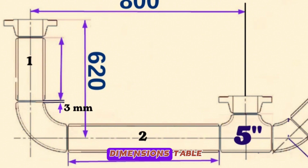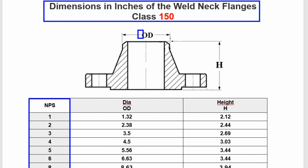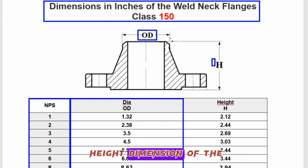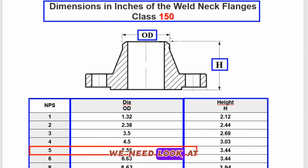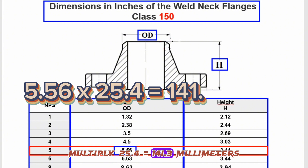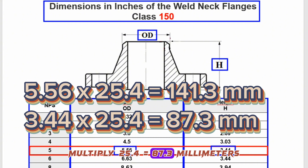Let's first look at the weld neck flange dimensions table. This is the chart of dimensions in inches of the weld neck flange Class 150. The NPS column shows the nominal pipe size, the OD column shows the outside diameter, and the H column shows the height dimension of the weld neck flange. Since the pipeline is 5-inch, we look at the 5-inch row. The outside diameter is 5.56 inches, which equals 141.3 millimeters. The height dimension is 3.44 inches, which equals 87.3 millimeters — so the length of the 5-inch weld neck flange is 87 millimeters.